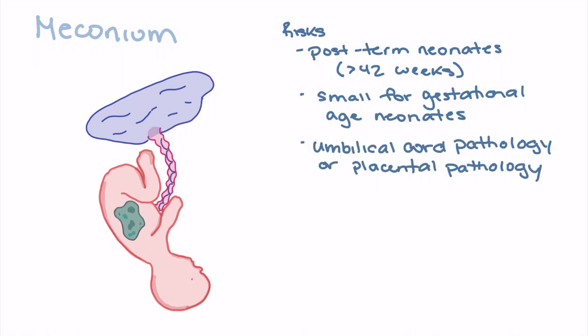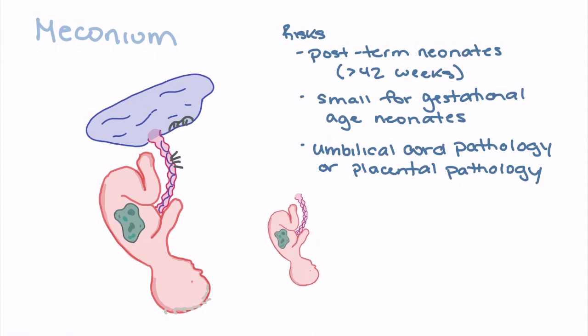Factors such as umbilical cord pathology or placental pathology can increase the chance of meconium aspiration as they put stress on the fetus in utero. Examples include any placental insult such as placenta previa or placental abruption which may cause ischemia or damage to the placenta, or any stress on the umbilical cord such as prolapse cord or fetal trauma.